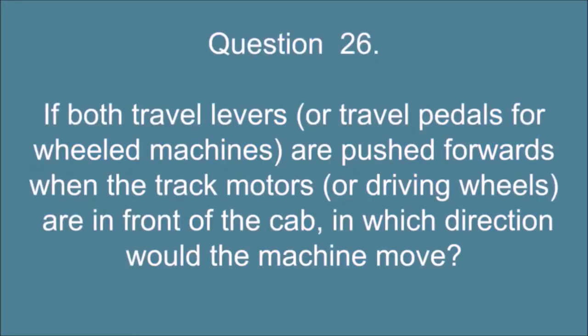Question 26. If both travel levers, or travel pedals for wheeled machines, are pushed forwards when the track motors, or driving wheels, are in front of the cab, in which direction would the machine move?